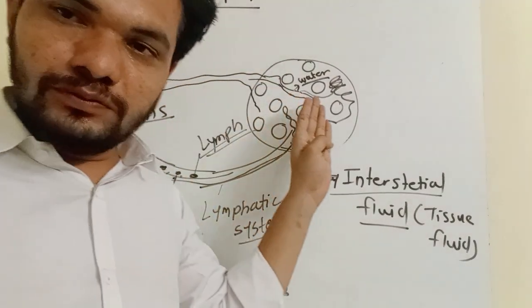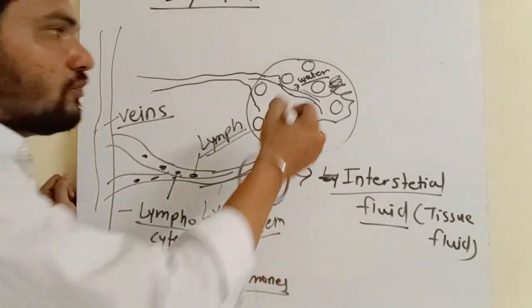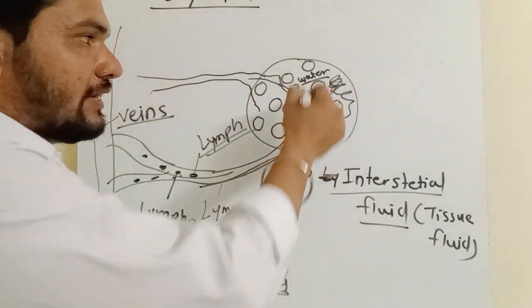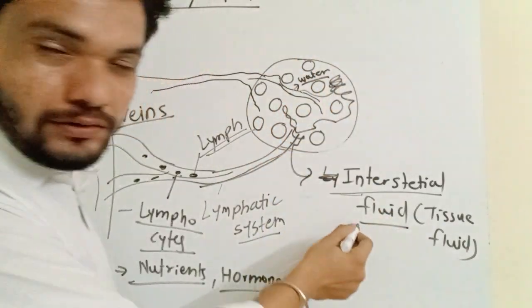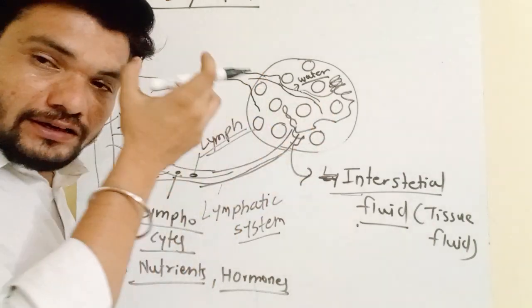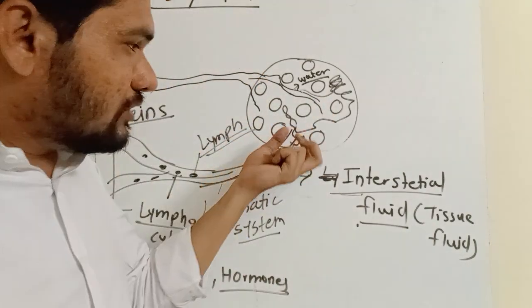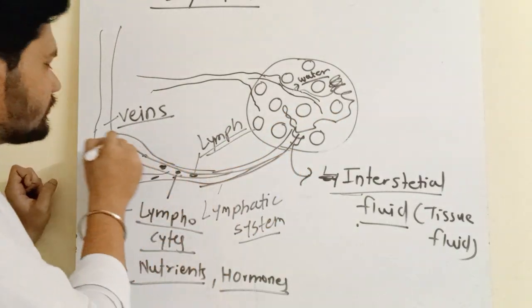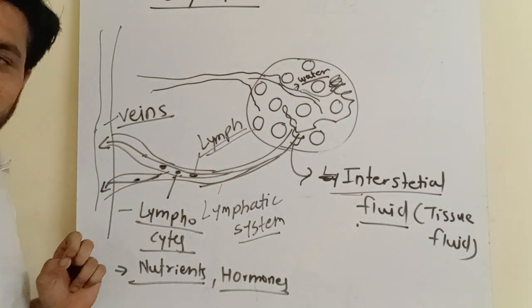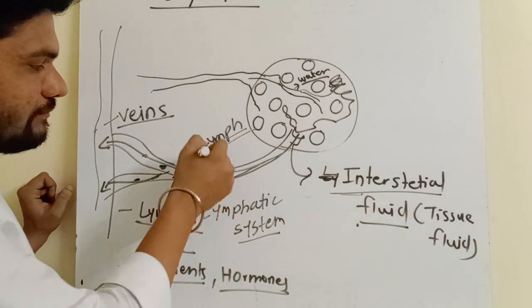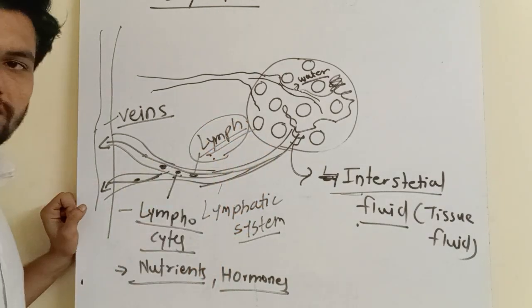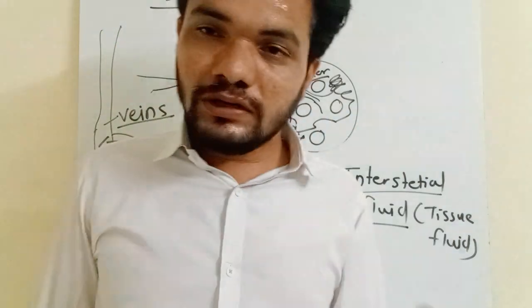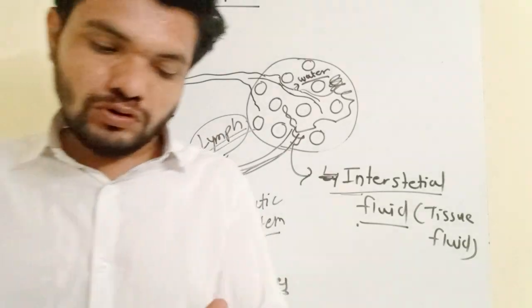To recap: whenever blood capillaries enter tissue for transportation of nutrients, some water along with water-soluble substances goes into the interstitial space forming interstitial fluid. The lymphatic system drains this interstitial fluid into the major veins, and this fluid is called lymph, which contains lymphocytes, nutrients, and hormones.